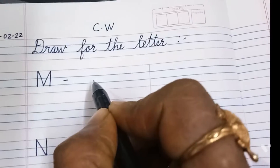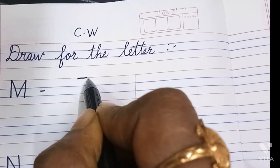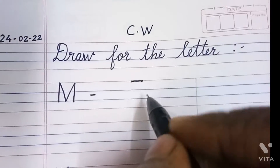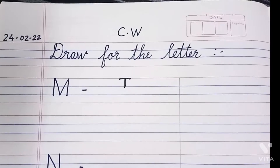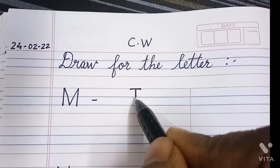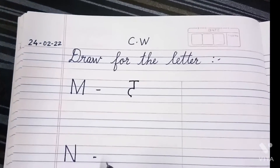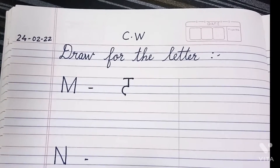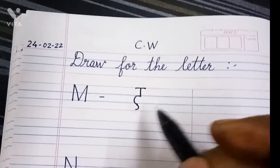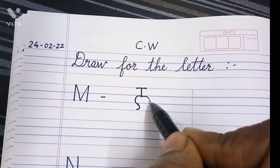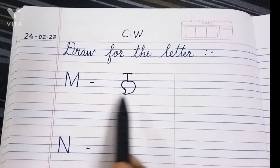Let's draw. Draw one small standing line till the blue line. Then one curve — front open curve. After this, draw one small back open curve. And then from here, join till here. This is mango. M says ma — mango.